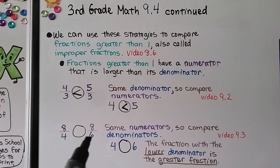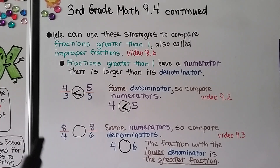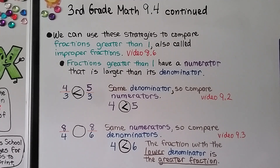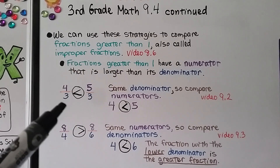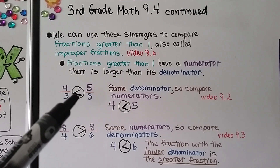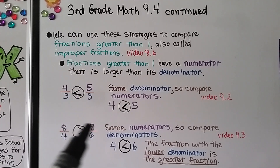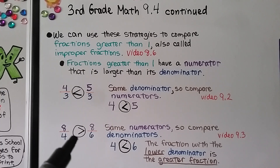Here we need to compare eight-fourths and eight-sixths. These are improper fractions because the numerators are larger than the denominators. They have the same numerator, so we can compare the denominators — we have a four and a six. The fraction with the lower denominator is greater because the whole is split into bigger pieces. Four is less than six, so eight-fourths is greater than eight-sixths. Notice that when they had the same denominator, the less-than symbol matched comparing the numerators, but when they had the same numerator, we used the opposite sign.